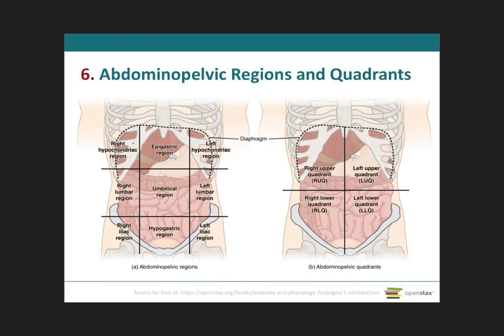Right over here we have the right hypochondriac region. Hypo means under, chondriac means cartilage, so it will be below the cartilage from the ribs — that's why it's called hypochondriac. And it's right because it is on the right side. If we have a right one, we're definitely going to have a left one on the left side: the left hypochondriac region.